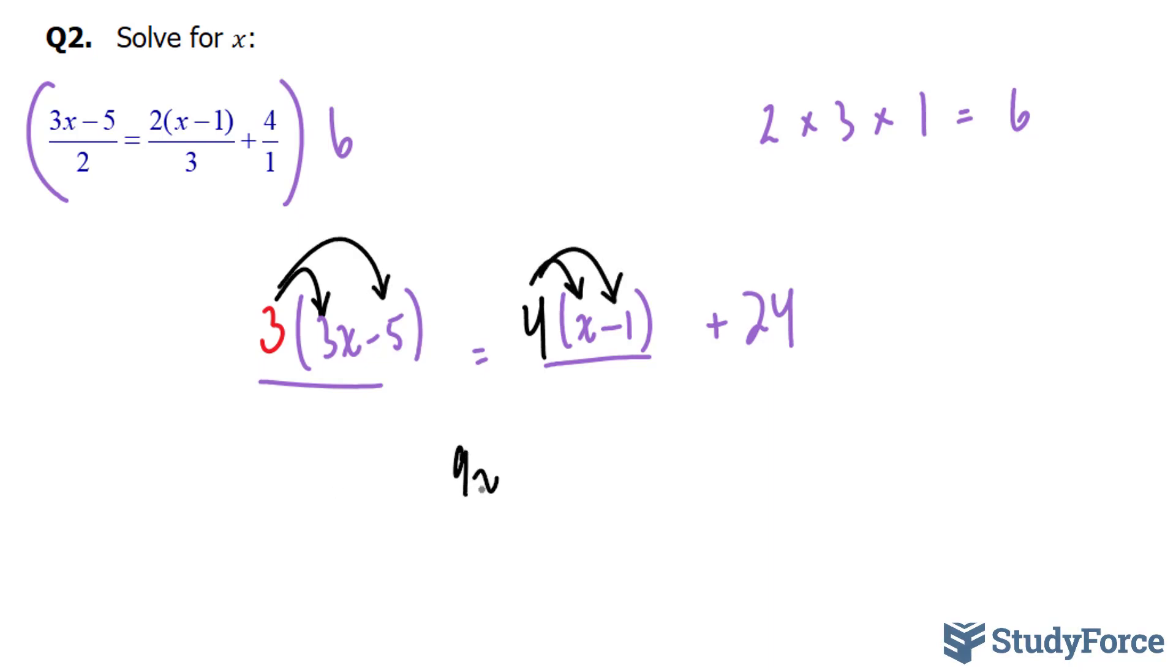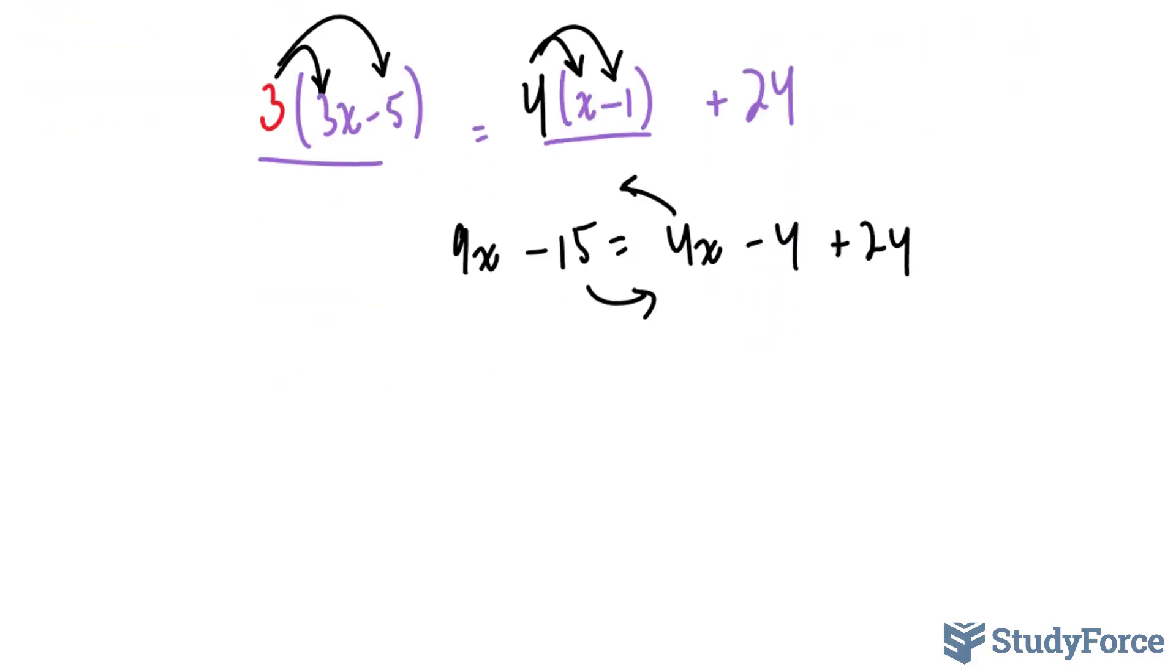I end up with 9x minus 15 is equal to 4x minus 4 plus 24. Bringing all the letter terms to one side and all the constants to the other side, I end up with 9x minus 4x is equal to negative 4 plus 24 plus 15.